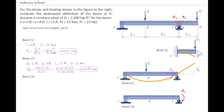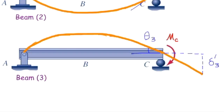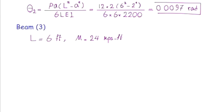Now let's consider how much is the slope of the third beam at point C. That beam deflects as shown — again we see indirect deflection caused by rotation at point C. We need to determine the slope, called theta three. Theta three, as discussed before, is ML over 3EI.